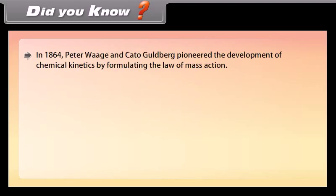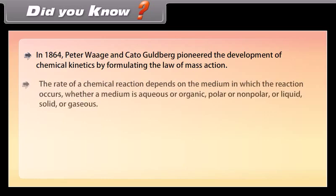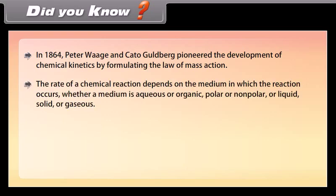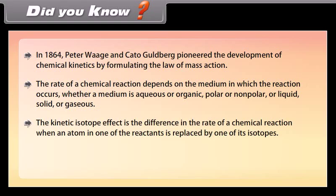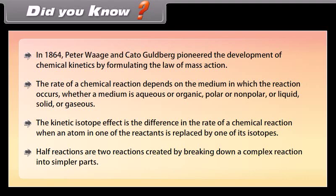In 1864, Peter Waage and Cato Guldberg pioneered the development of chemical kinetics by formulating the law of mass action. The rate of a chemical reaction depends on the medium in which the reaction occurs, whether a medium is aqueous or organic, polar or nonpolar, or liquid, solid, or gaseous. The kinetic isotope effect is the difference in the rate of a chemical reaction when an atom in one of the reactants is replaced by one of its isotopes. Half reactions are two reactions created by breaking down a complex reaction into simpler parts.